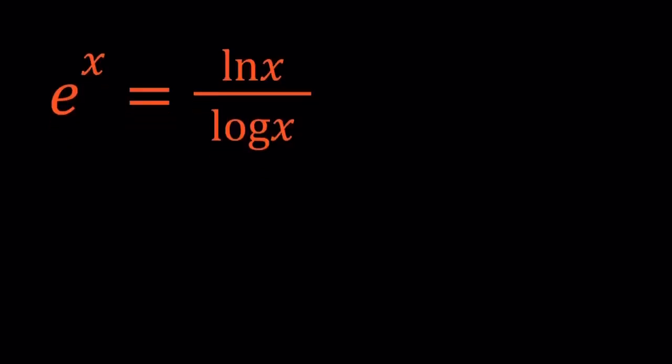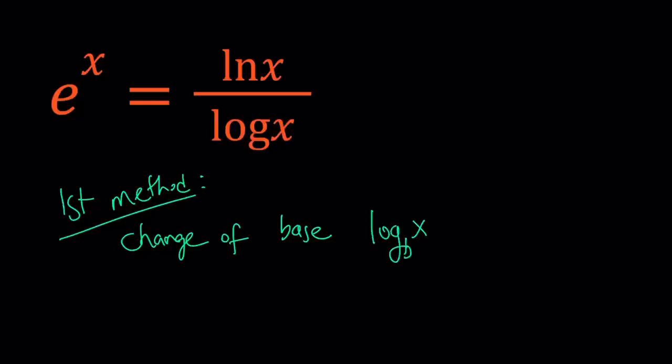So for our first method, we're going to use a formula called change of base. Now change of base is a very important formula in logarithms because it really allows you to simplify complicated things. And here's how it works. If you have something like log of, let's say, x with base b, and you want to turn it into another base, usually we use either ln or log, which makes a lot of sense. I use ln very commonly. So we can write this as ln x over ln b. Notice that x goes here and b goes here. It just works.